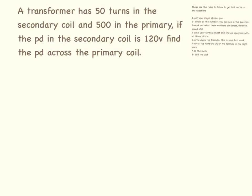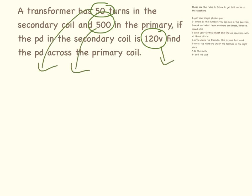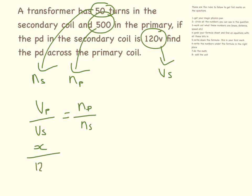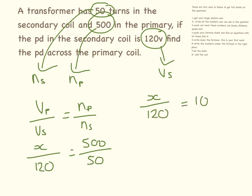Now I'd like you to pause and have a go at these yourself. A transformer has 50 turns in the secondary coil — that makes that Ns — and 500 in the primary coil making that Np. If the potential difference in the secondary coil is 120 volts, find the potential difference across the primary coil. So Vp divided by Vs equals Np divided by Ns. Vp we don't know, Vs is 120, Np is 500, Ns is 50. So x divided by 120 equals 10, meaning x equals 10 times 120, so x equals 1200 volts.